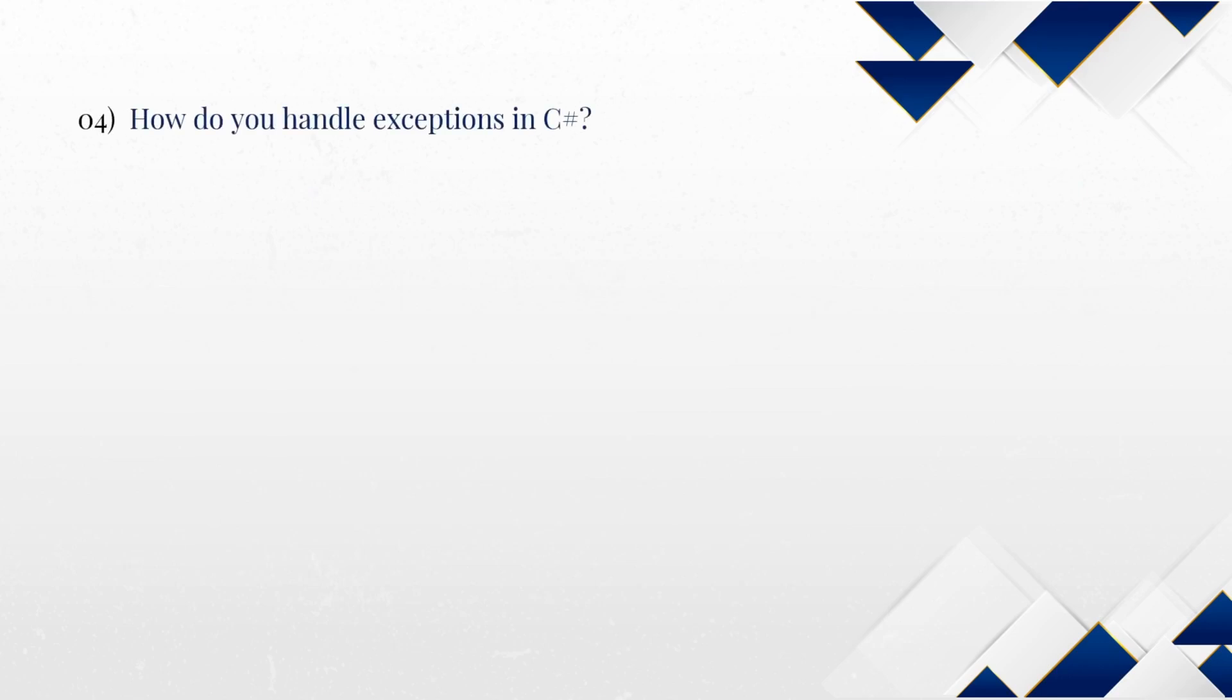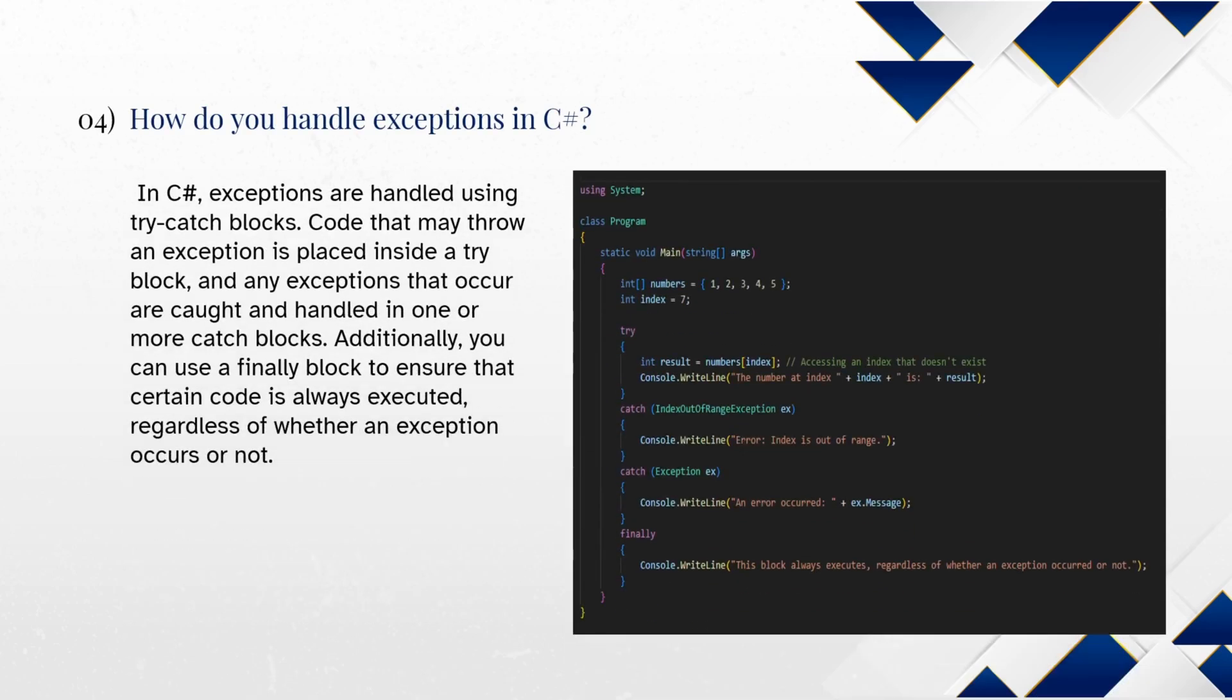How do you handle exceptions in C-Sharp? In C-Sharp, exceptions are handled using try-catch blocks. Code that may throw an exception is placed inside a try-block, and any exceptions that occur are caught and handled in one or more catch blocks. Additionally, you can use a finally block to ensure that certain code is always executed, regardless of whether an exception occurs or not.